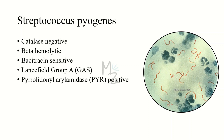Streptococcus pyogenes is a beta-hemolytic bacterium and is bacitracin sensitive. It belongs to Lancefield group A classification. If you see 'GAS,' it stands for Group A Strep bacteria — that's strep pyogenes. This bacterium is also pyrrolidonyl arylamidase (PYR) positive. The PYR test is a qualitative procedure for determining the ability of strep to enzymatically hydrolyze L-pyrrolidonyl beta-naphthylamide. A positive PYR test allows identification of Group A strep (e.g., strep pyogenes) and Group D strep (e.g., enterococcus).